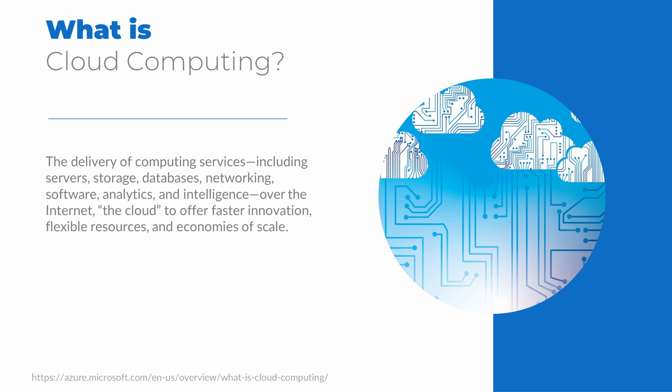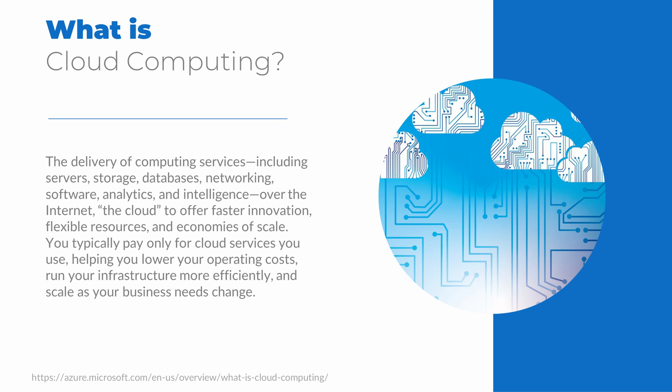Economies of scale simply means that the more an organization does or buys something, the cheaper it gets. For example, it's typically cheaper to buy grocery items in bulk. The same applies to servers — buying one or two servers is relatively expensive, but it may be cheaper per server to buy 100. These economies of scale help keep cloud costs down. We only pay for cloud services we use, which is important compared to on-premises computing, where we pay for everything whether we use it or not.